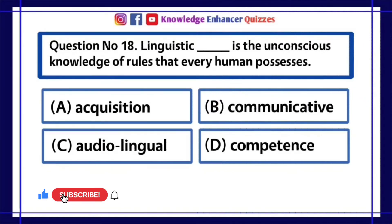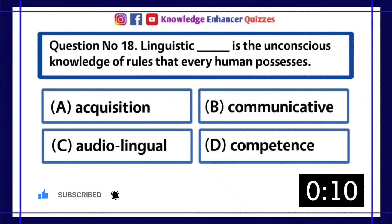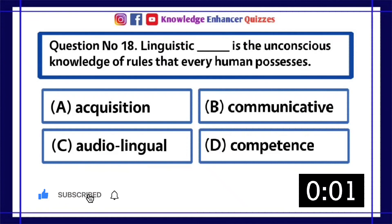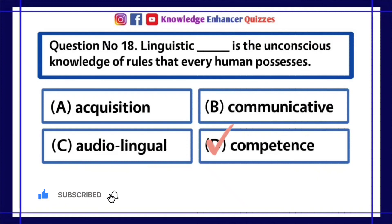Question Number 18: Linguistic dash is the unconscious knowledge of rules that every human possesses. A. Acquisition, B. Communicative, C. Audiolingual, D. Competence. Option D is the right answer.